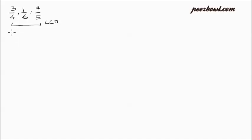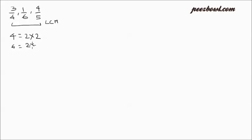Let us see all the prime factors of these three numbers: 4, 6, and 5. For 4, it has two prime factors: 2 multiplied by 2. For 6, we can write it as 2 multiplied by 3. And 5 will be written as just 5.